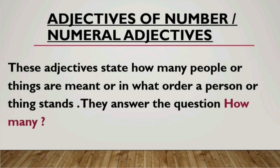Since adjectives of number answer 'how many,' they refer to countable nouns — things that you can count. They tell us how many people or things there are, and they also tell us the order of the person or thing. After knowing the basic meaning of adjectives of number, we will talk about the different types and discuss examples in detail.